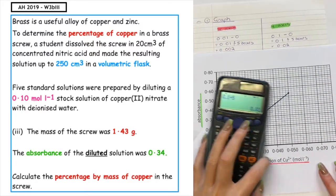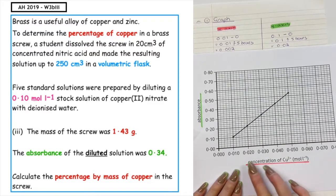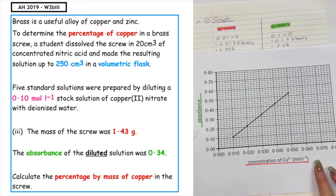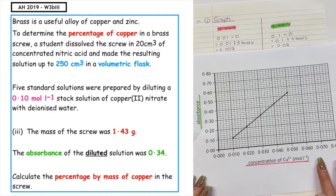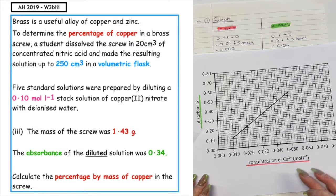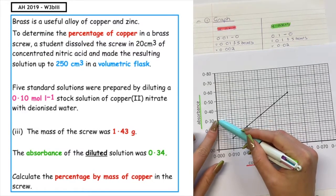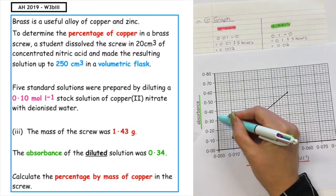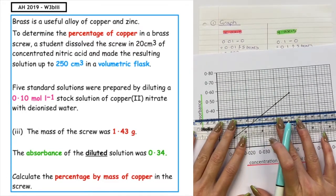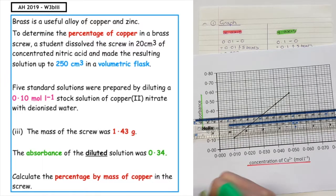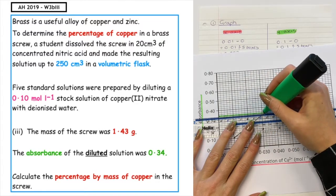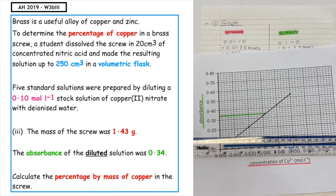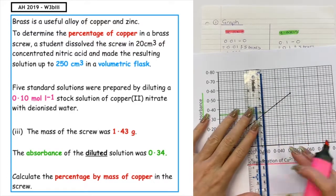Now we want to obtain a concentration that we can use to work out the rest of our calculation. We can see in the question at the bottom, they give us the absorbance of the diluted solution and the value they give us is 0.34. So we want to go up to 0.3. Remember, each box is worth 0.02. So we want to go up two boxes, one, two. Using your ruler, we're going to use a highlighter so it's easier for you to follow. We want to draw a line from 0.04 to where it meets the calibration line. We then want to extrapolate that down to obtain the concentration for that particular absorbance.